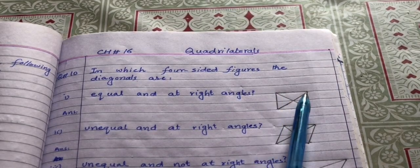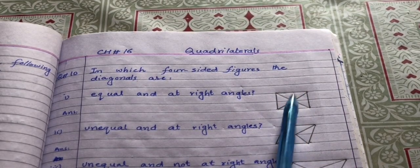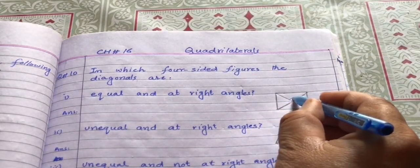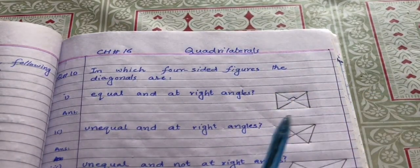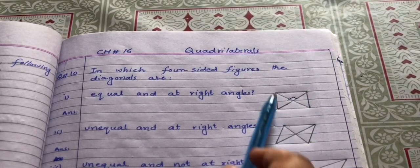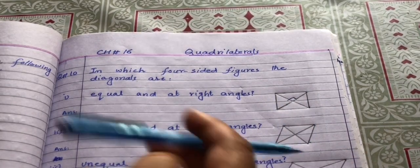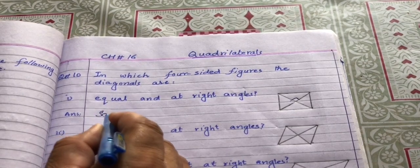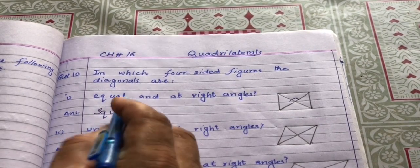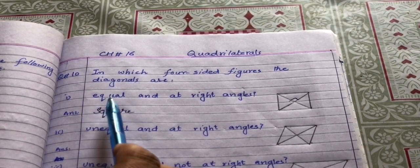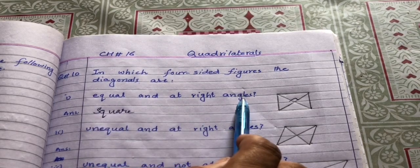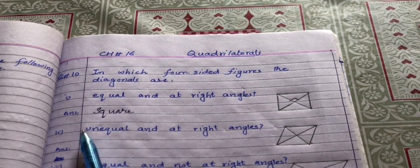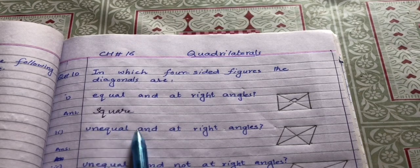As we know, the diagonals of a square bisect each other at 90 degrees and they are equal in length. So the answer is square — the diagonals of a square are equal and at right angles. The second case is: the diagonals are unequal and at right angles.